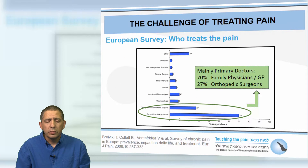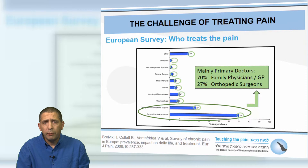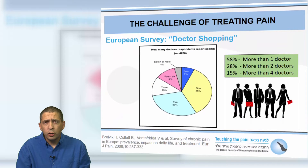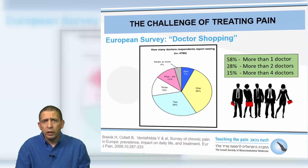Treating pain is challenging. When patients were asked who treats their pain in the European survey, they answered mainly primary doctors — 70% family physicians and GPs — and 27% orthopedic surgeons. But these numbers sum to more than 150%, because patients are doing doctor shopping. In the same survey, 58% reported seeing more than one doctor, and 15% reported seeing more than four doctors to ease their pain.